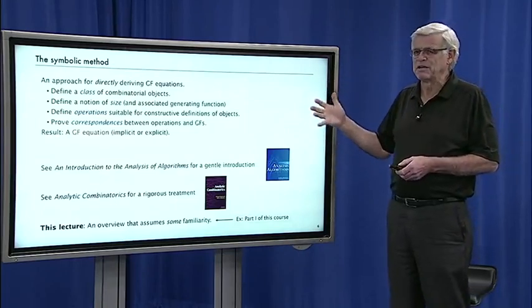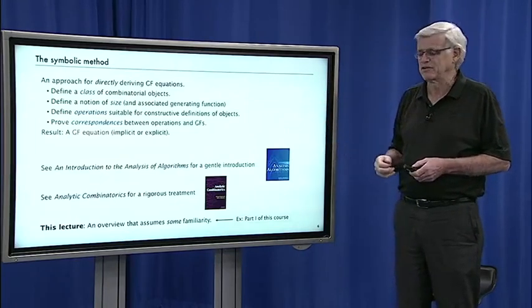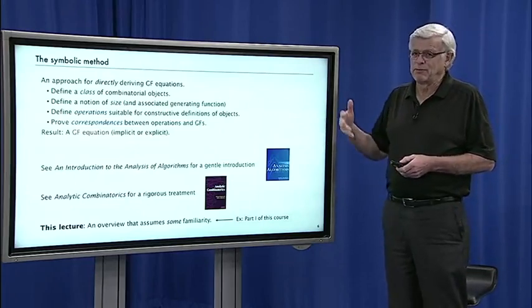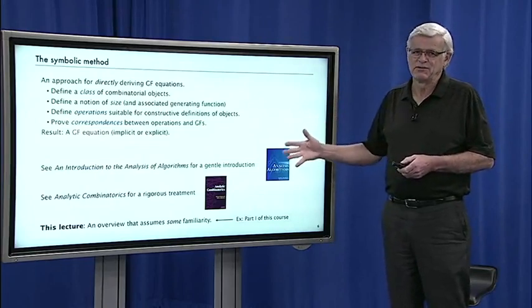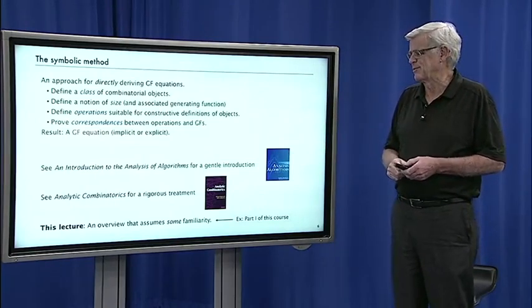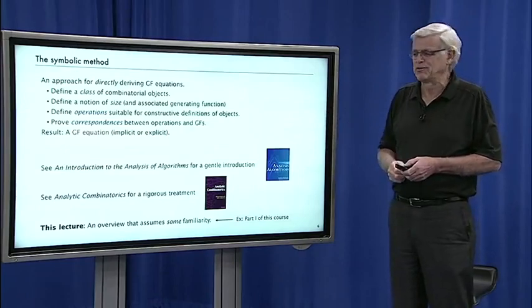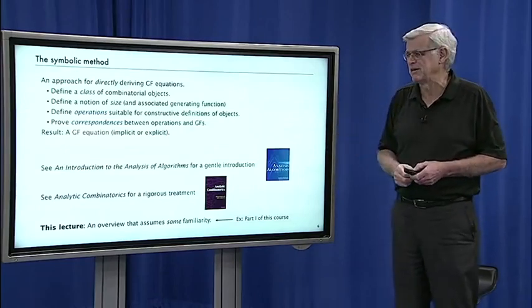If you find that we're moving a bit quickly, refer back to the analysis of algorithms book. If you find that we're moving a bit slowly, read chapters one, two, and three of analytic combinatorics. Then within a lecture or two, we'll all be moving at the same pace.